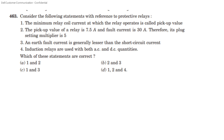Question 2: Consider the following statements with reference to Protective Relay. The minimum relay current at which the relay operates is called pickup value. The pickup value of a relay is 7.5 Ampere. Fault current is 30 Ampere. Therefore, its plug setting multiplier is 5. The second fault current is generally lesser than the short-circuit current. The induction relays are used with both AC and DC quantities. The answer is option C — this is called 1503.